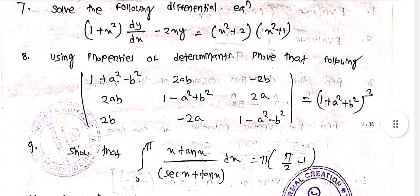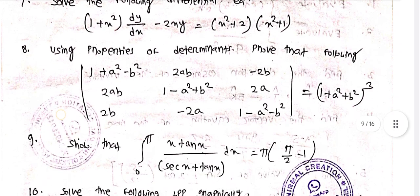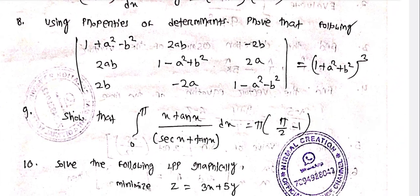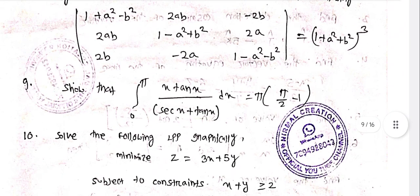Using properties of determinants, prove that the determinant with rows [1+x²-b², 2ab, -2b], [2ab, 1-x²+b², 2a], [2b, -2a, 1-x²-b²] equals (1 + x² + b²)².